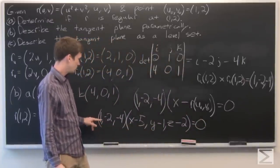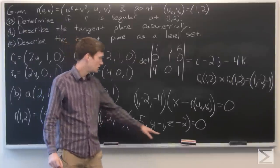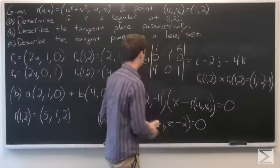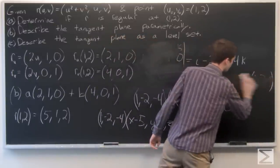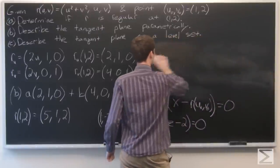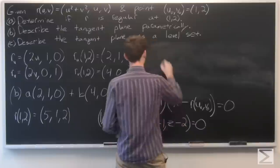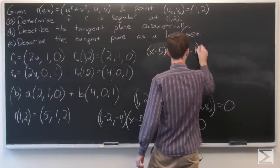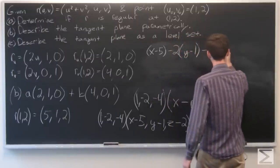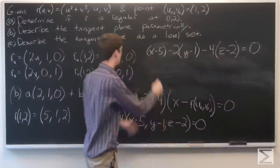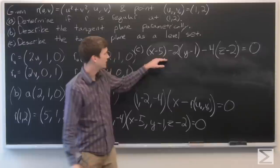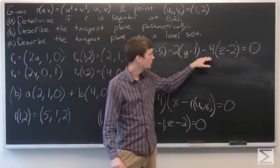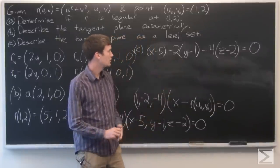And we can take the dot product, just 1 times x minus 5, negative 2 times the quantity y minus 1, and negative 4 times the quantity z minus 2. And we get our tangent plane as a level set for a part C is x minus 5 minus 2 times y minus 1, minus 4 times z minus 2, equals 0. So that's our tangent plane as a level set.